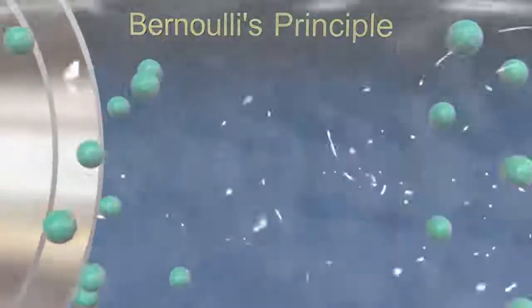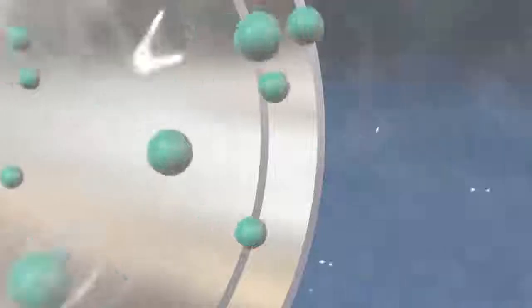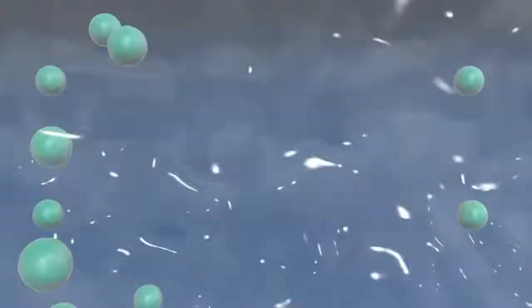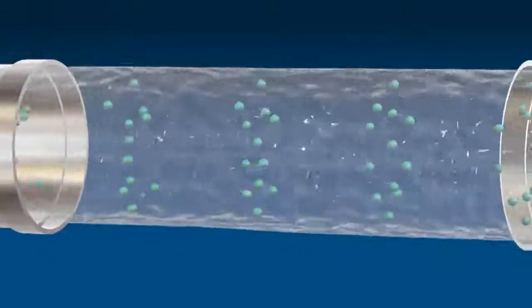Bernoulli's Principle. The flow of a fluid is streamlined if every particle of the fluid flows exactly the path of its preceding particle and has the same velocity as that of its preceding particle.